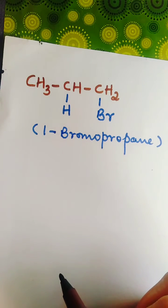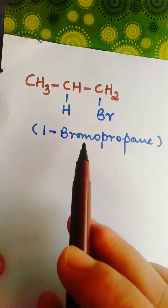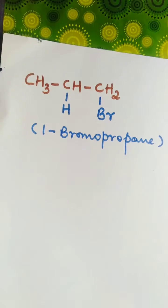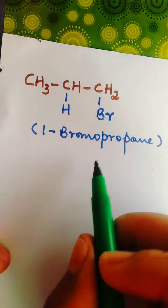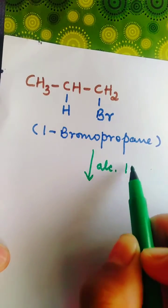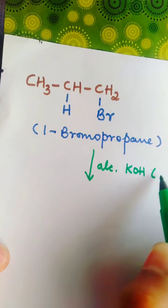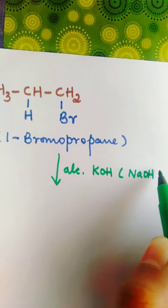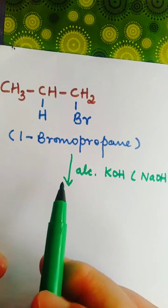Let us see what will happen when 1-bromopropane is treated with alcoholic potassium hydroxide or sodium hydroxide. In this case,